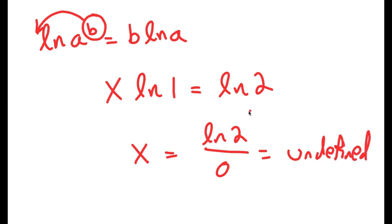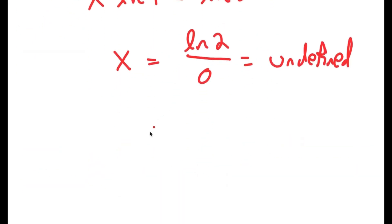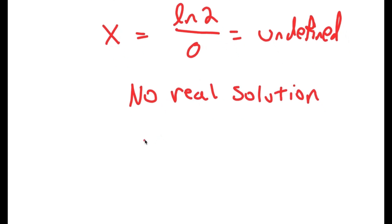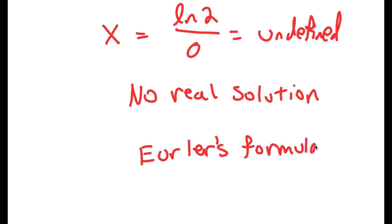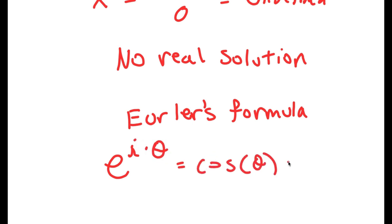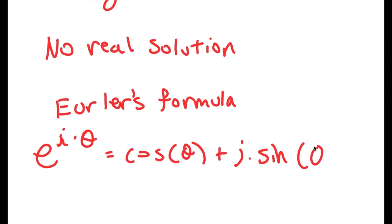So we know that this equation has no real solution, but it could still have imaginary solutions. To actually solve this, I'm going to use something known as Euler's formula. Basically, this formula states that if I have something in the form e to the power of i times theta, this is equal to cosine of theta plus i times sine of theta.